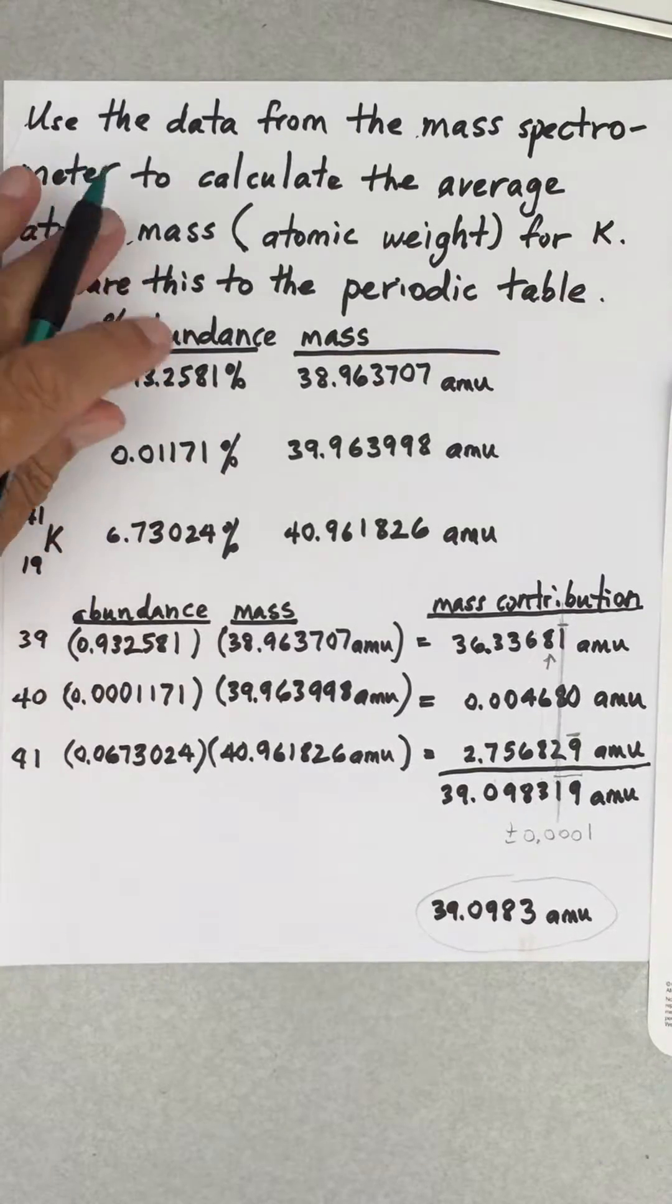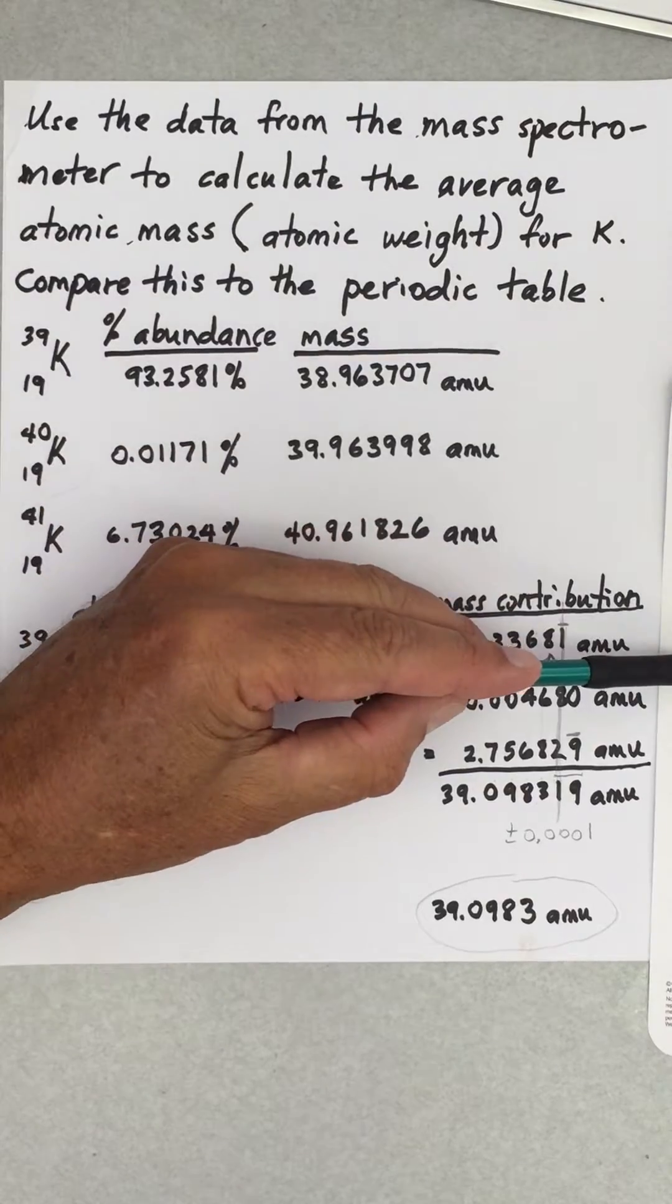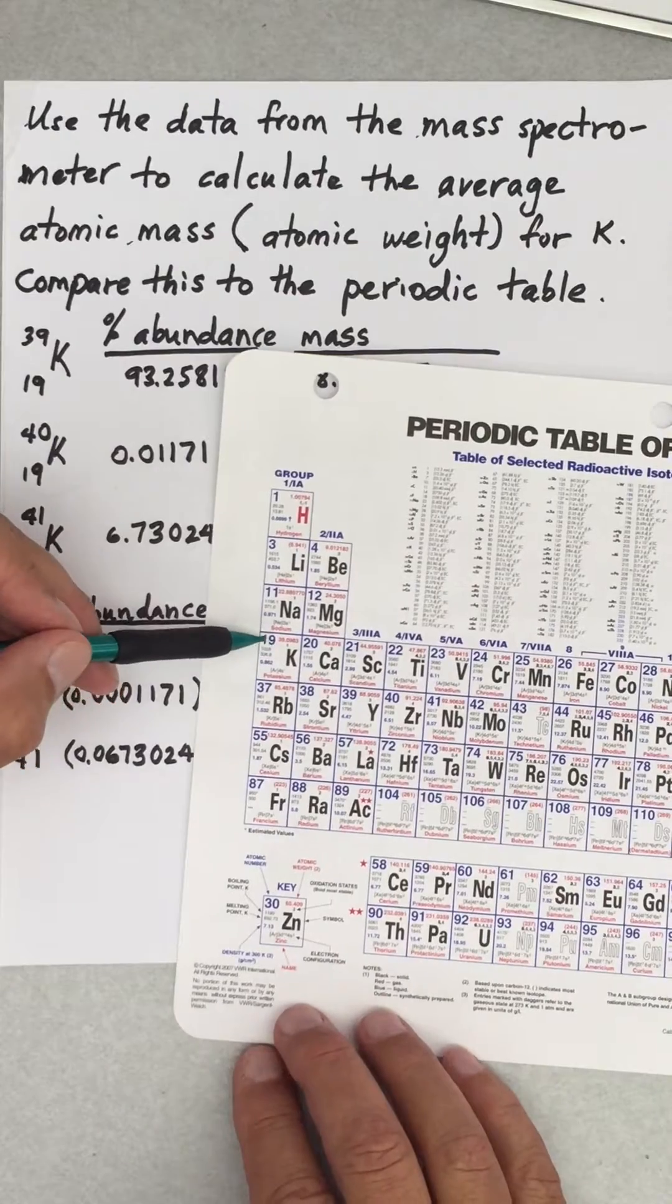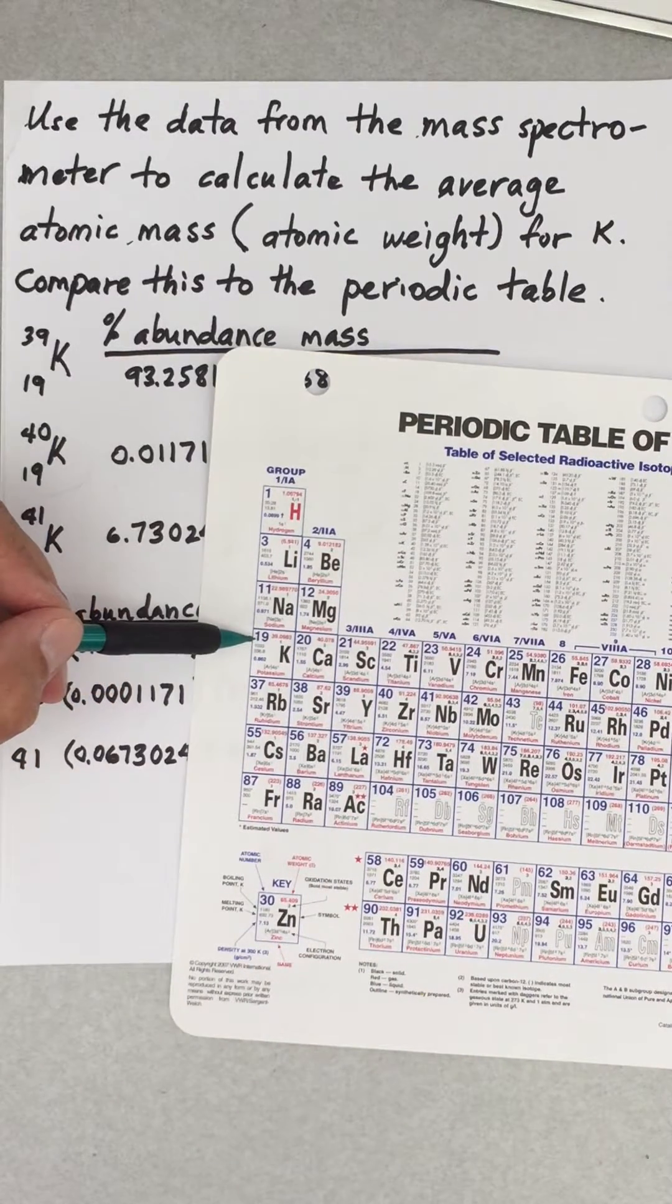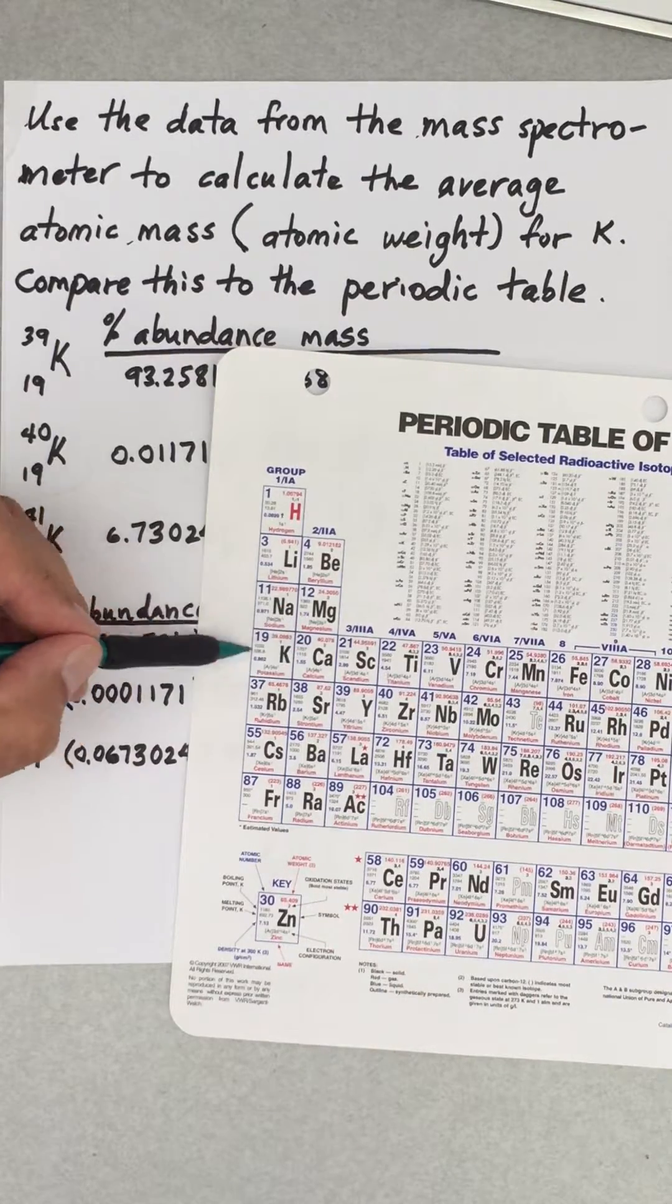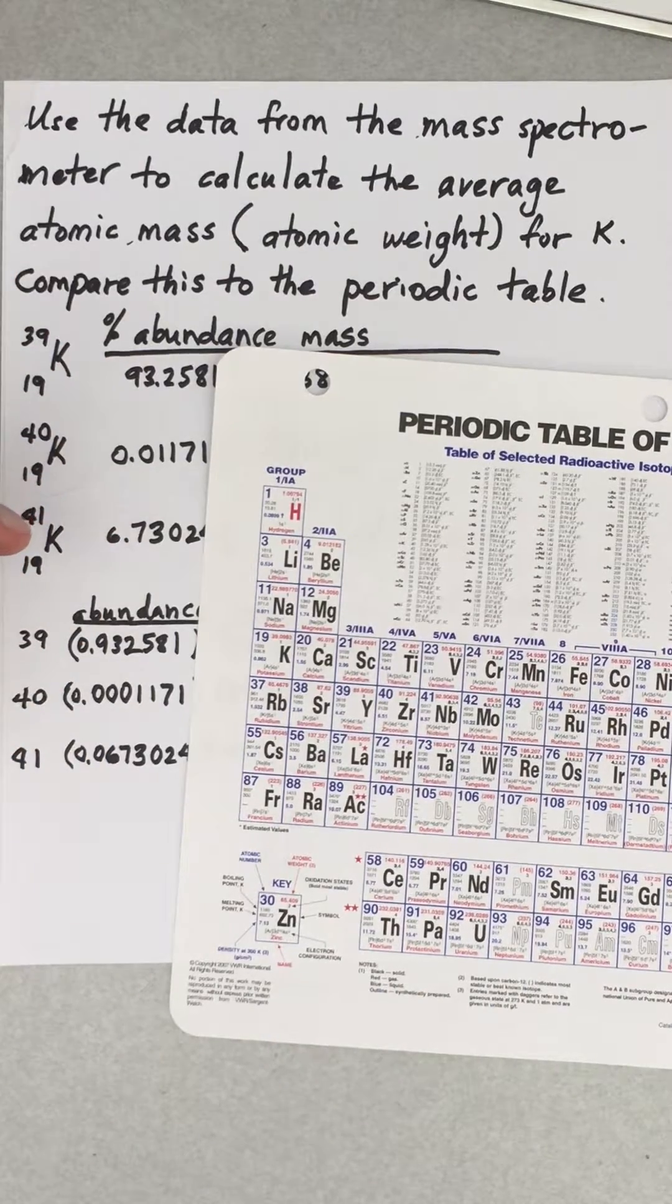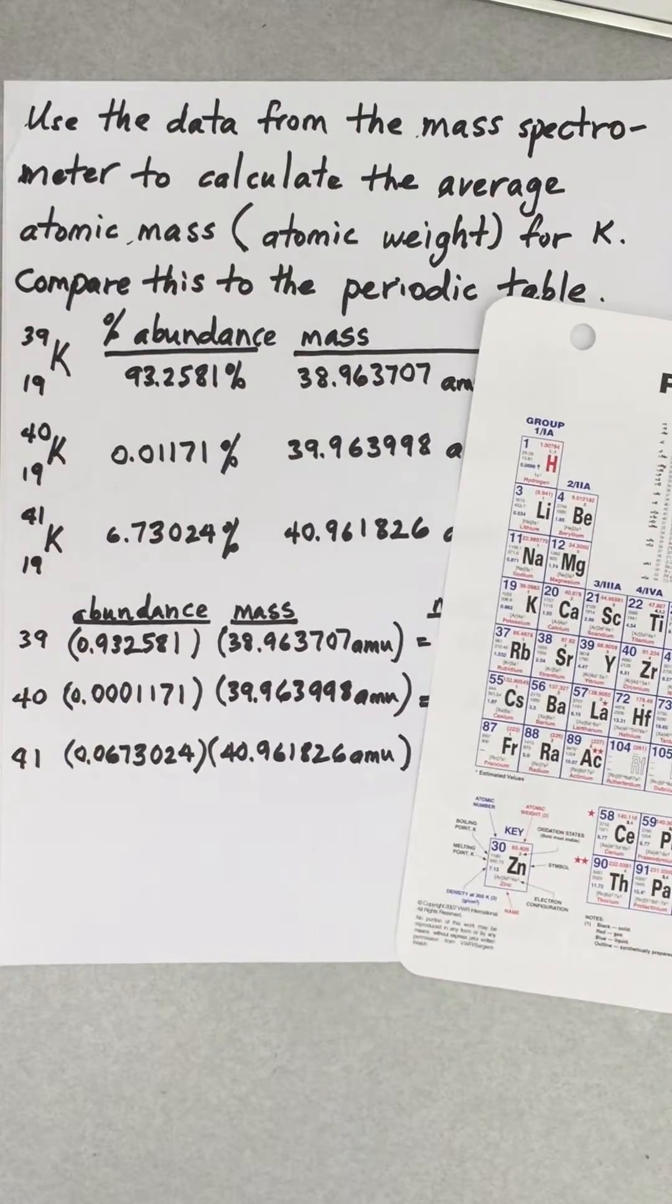Well, most likely because this data right here was similar to the data used to get that number right there. So you have to realize numbers on the periodic table are what we call accepted values. So the Congresses get together of scientists and they decide that this is the number that best represents all potassium samples that come from earth. But in fact, different samples from different parts of the earth are going to be different. The world is not homogeneous.